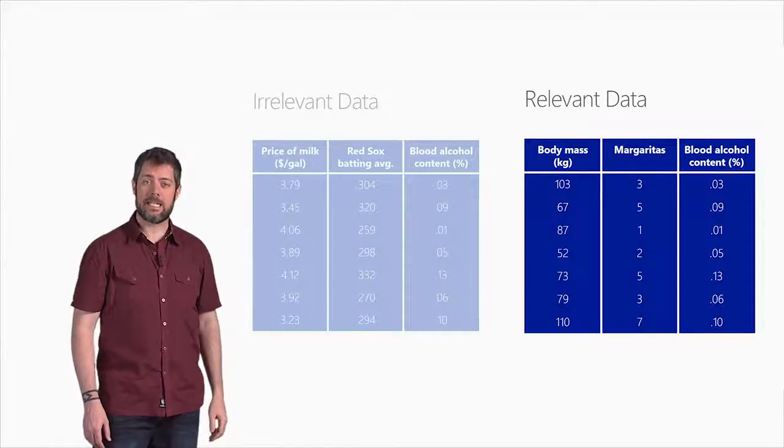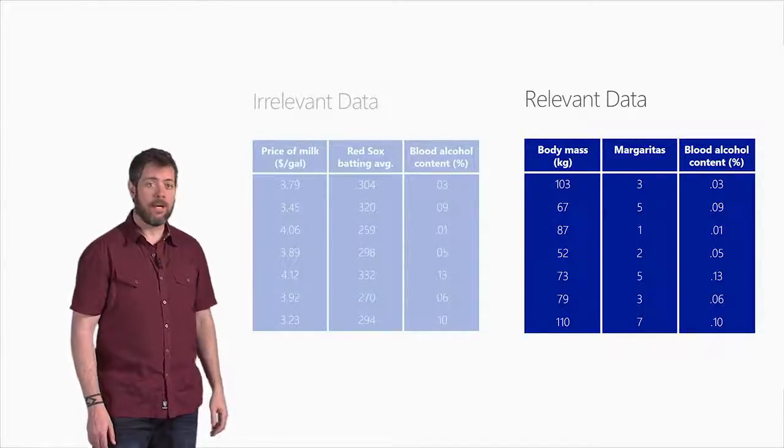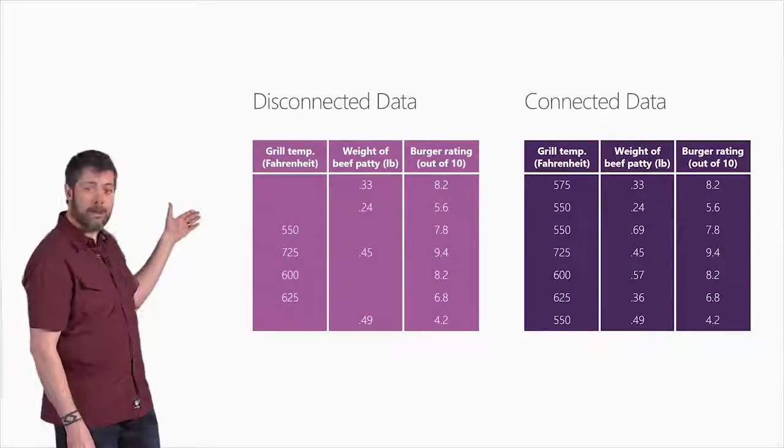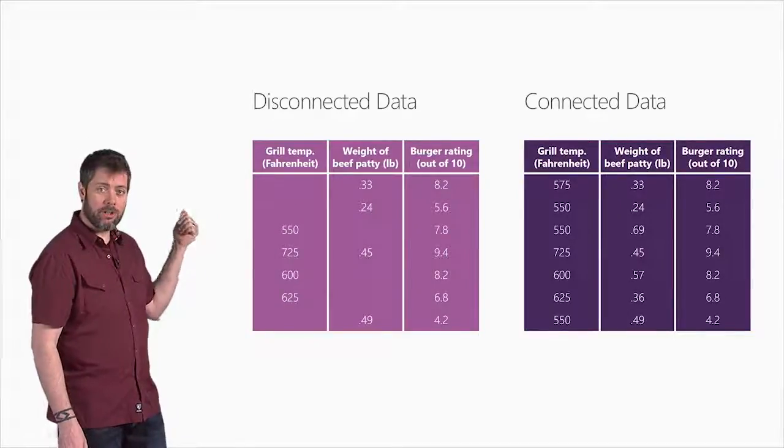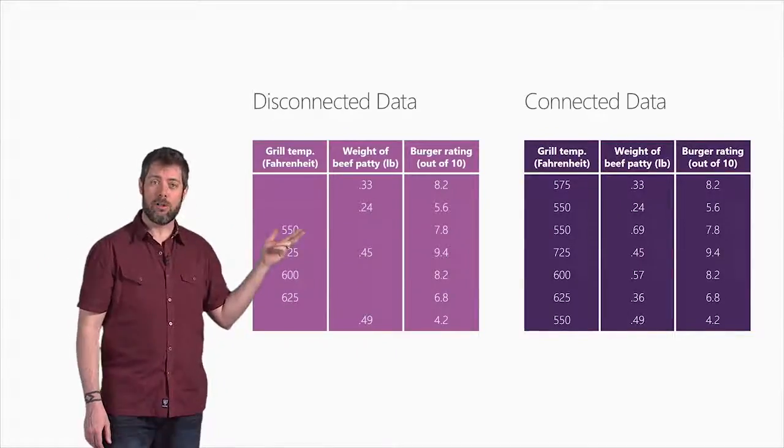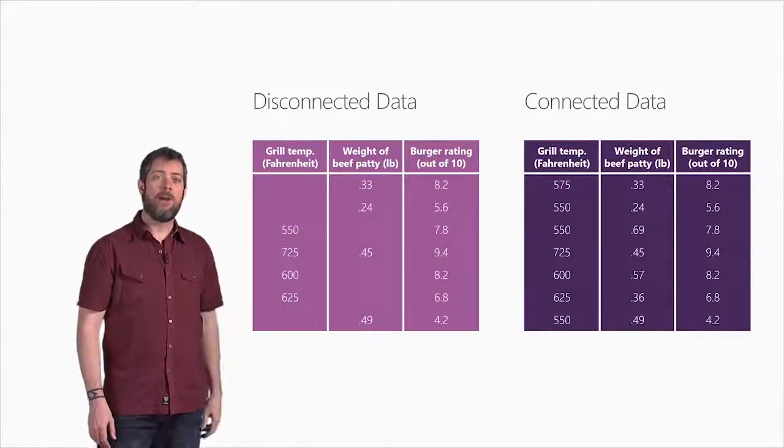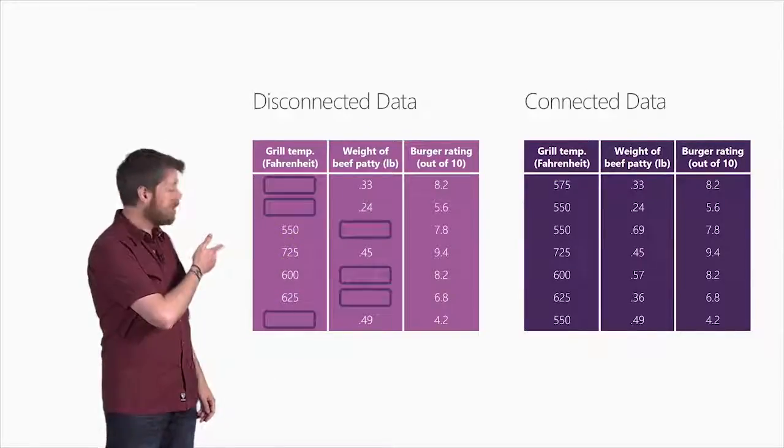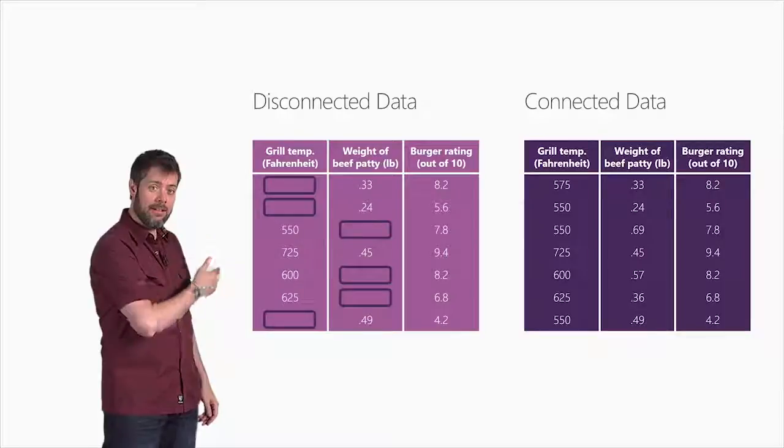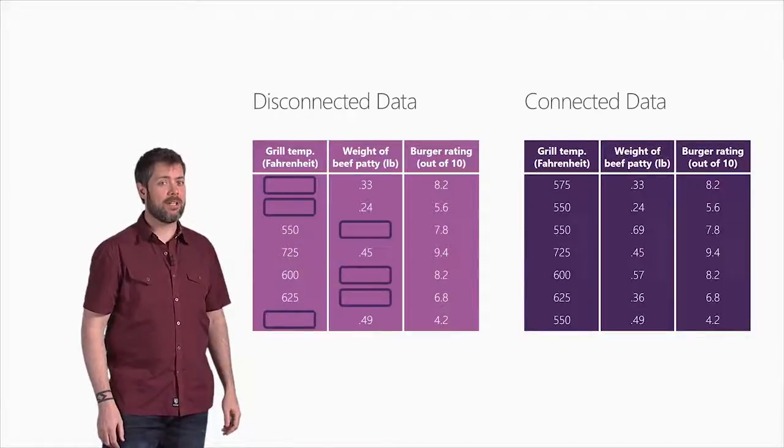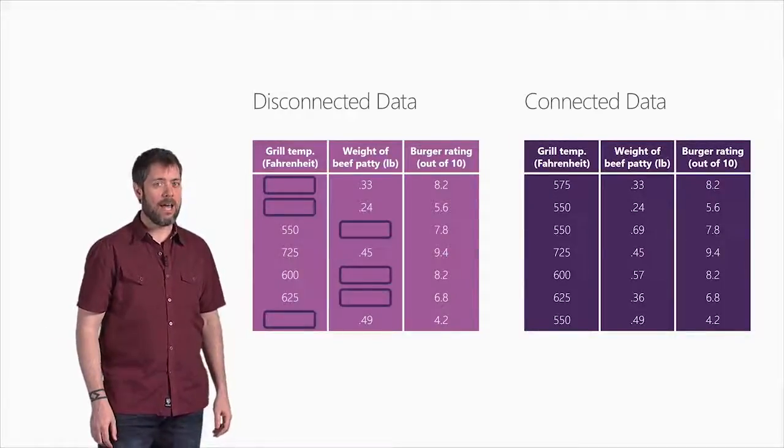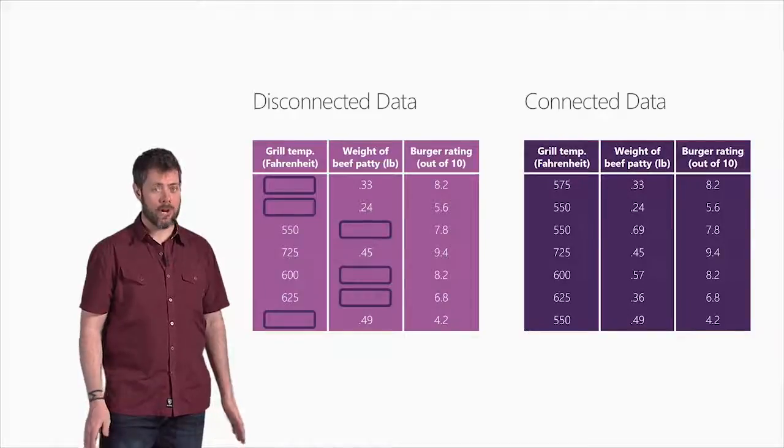The next ingredient is connected data. Here's some relevant data on the quality of hamburgers: grill temperature, patty weight, and the rating in a local food magazine. But notice the gaps in the table on the left. Most datasets are missing some values, and it's common to have holes like this, and there are ways to work around them.